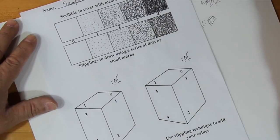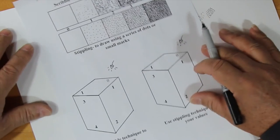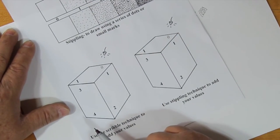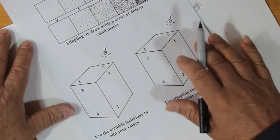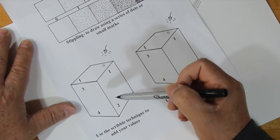All right, so once you have your two value scales done, one with scribble and one with stippling, you're going to use both of those techniques to complete these two little drawings on the bottom. So, I'm going to show you how to get these started, but they're super easy to do.